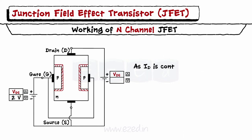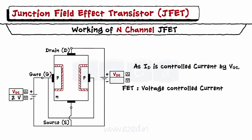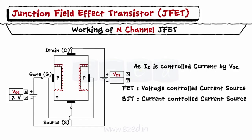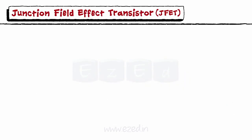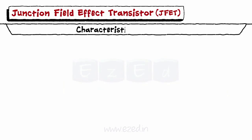In the JFET, the output current ID is controlled by the input voltage VGS. Thus, FET is a voltage control device whereas BJT is a current control device. The characteristics of JFET are as shown in the figure.